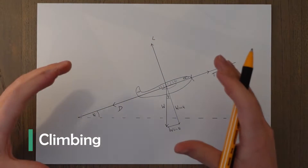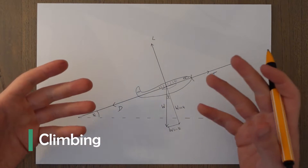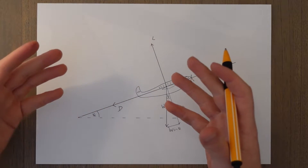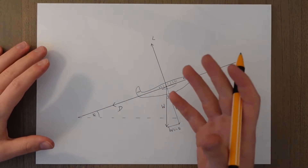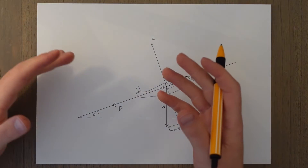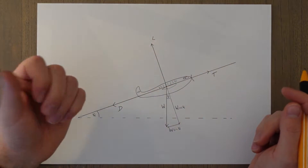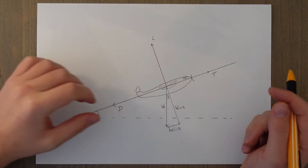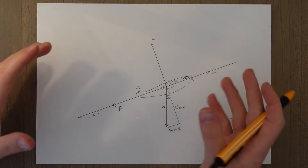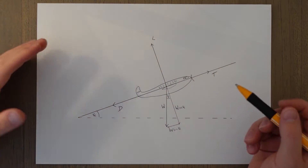Our baseline for all these manoeuvres is steady level flight. We're not changing our altitude or direction, and this is where our four forces of the aircraft are all in balance — thrust equal to drag and lift equal to weight. As soon as we move away from this steady level flight, things change.